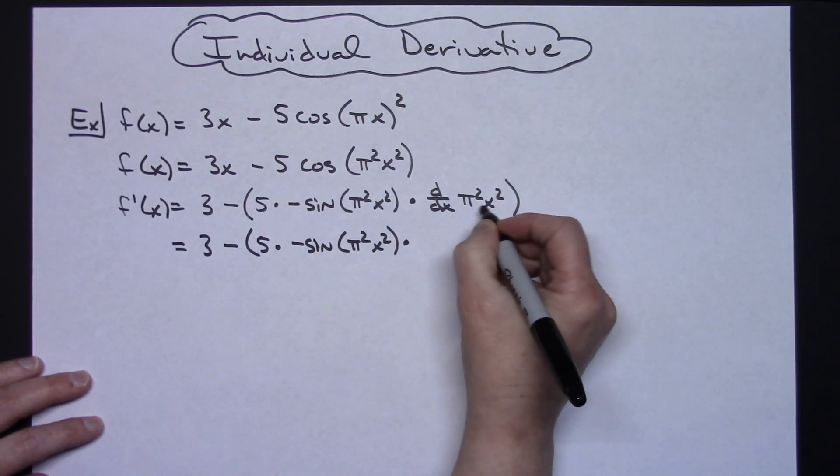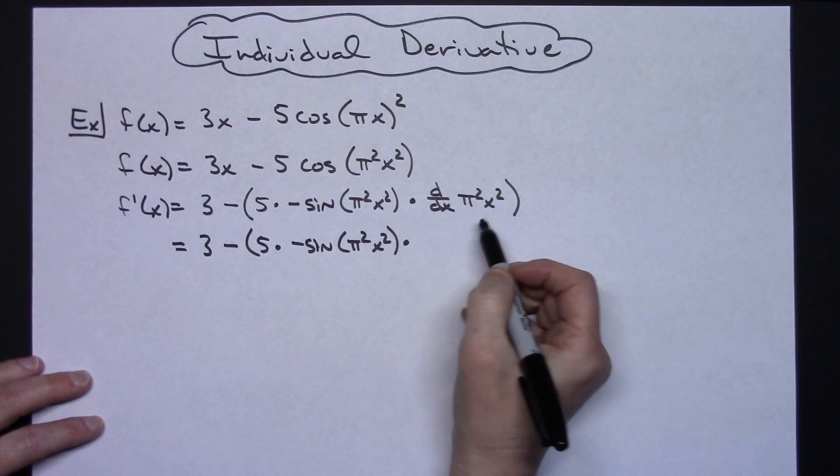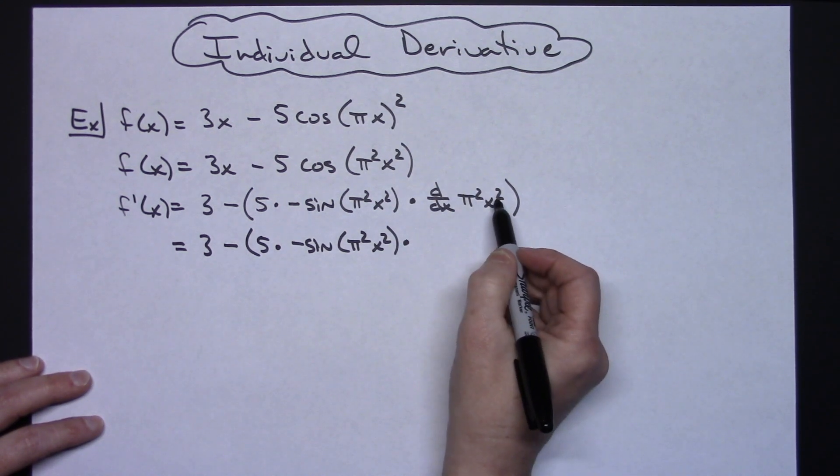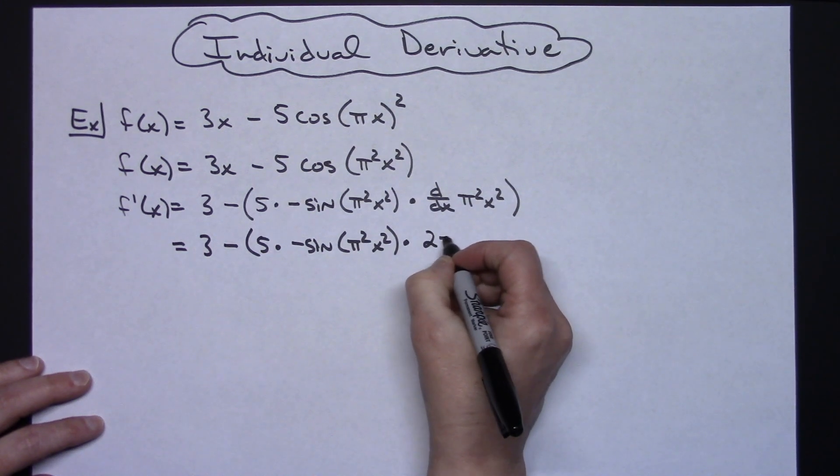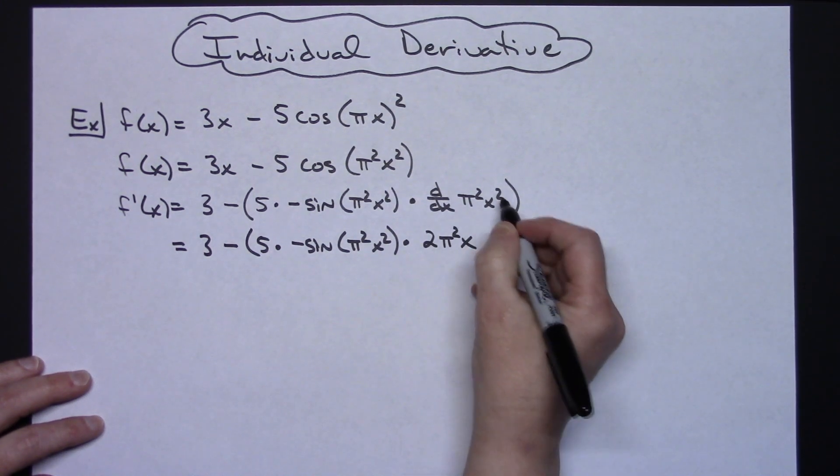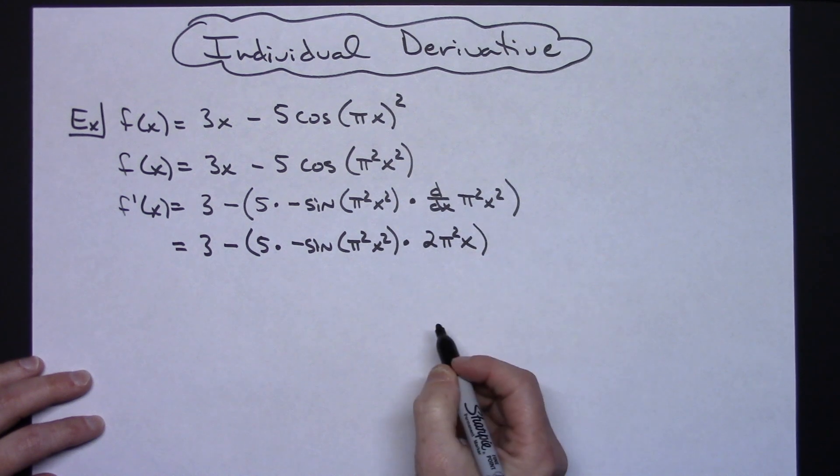Alright now taking the derivative of this pi squared is just like any other number there in front so I'm just going to do power rule there pull that 2 down in front so it's going to be a 2 pi squared and then x. Close that set of parentheses.